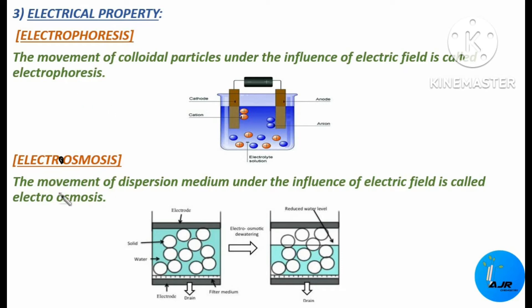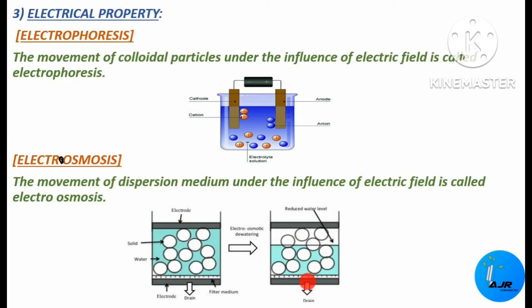Electroosmosis is the movement of the dispersion medium under the influence of an electric field. Here, the dispersion medium — that is, the solvent — is moving, leaving behind the colloidal particles. The colloidal particles remain as such whereas the dispersion medium moves, draining towards the electrode under the influence of the electric field. This is called electroosmosis.